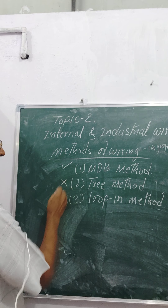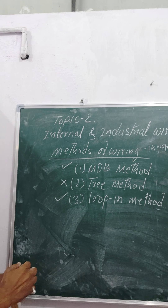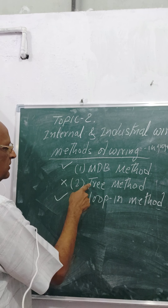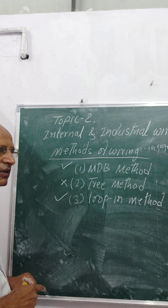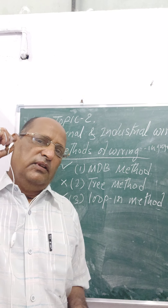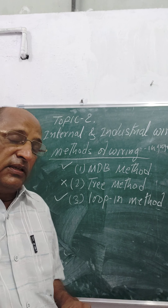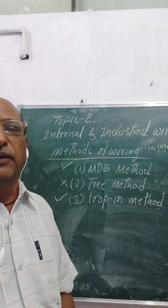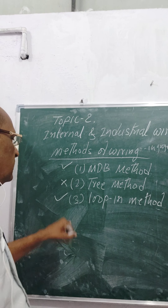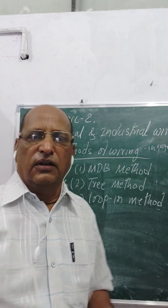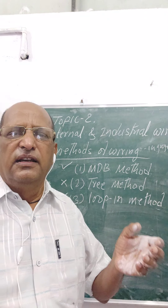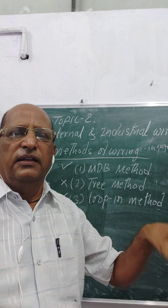The tree method is not preferred, while the MDB method is preferred. The loop-in method can be used with both MDB and tree methods, but the tree method has a key disadvantage: it has one single control for all circuits, so if a fault occurs in any one circuit, the whole system goes off. In the MDB system, every circuit has its own MCB or cutout for individual control.